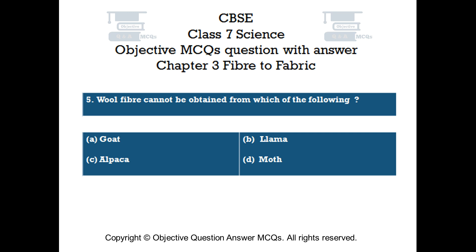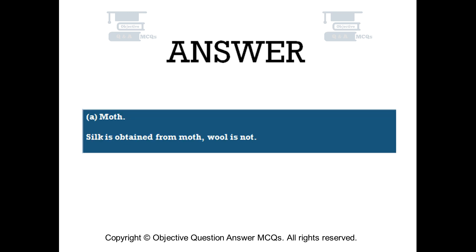The right answer is Option D — Moth. Silk is obtained from moth; wool is not.